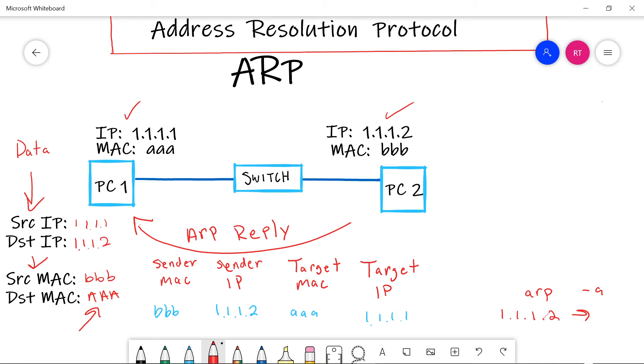Now, as soon as PC one gets this ARP reply, it's going to populate its ARP cache. Remember this thing we talked about here? So when you do an ARP dash a, you're going to see 1.1.1.2 maps to B, B, B, B, B. Now we have a valid ARP entry so we can finish building the ethernet frame that we were trying to build in the first place. So the source MAC is going to be all A's. The destination MAC address is going to be the MAC address of PC two, all B's.